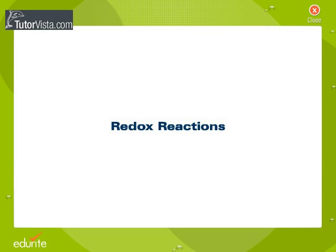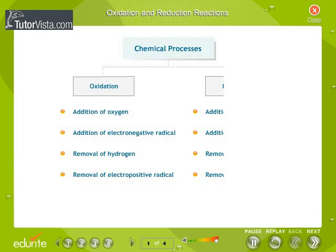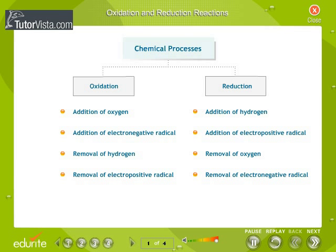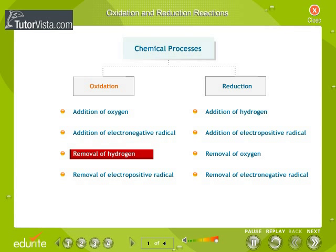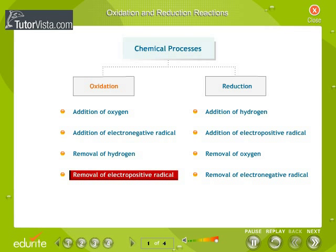All chemical processes use characteristic chemical reactions called Oxidation and Reduction Reactions. The oxidation process involves the addition of oxygen or any other electronegative radical, or the removal of hydrogen or any other electropositive radical in a chemical reaction.